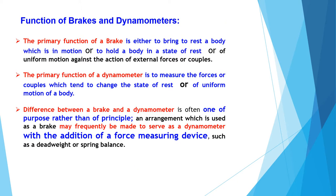The functions of brakes and dynamometers are very similar. The primary function of a brake is either to bring to rest a body which is in motion, or to hold a body in a state of rest or uniform motion against the action of external forces or couples. The primary function of a dynamometer is to measure the forces or couples which tend to change the state of rest or uniform motion of a body. The difference between a brake and a dynamometer is often one of purpose rather than principle — the same arrangement used as a brake may frequently serve as a dynamometer with the addition of force-measuring devices such as a dead weight and spring balance.